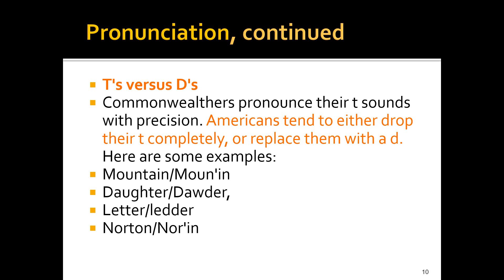For 'daughter,' the Commonwealthers — that is the Britishers — pronounce it with precision. The Americans replaced the T with a D, saying 'daughter.' They either drop the T completely, as in 'mountain' becoming 'mounin,' or replace it with a D, as in 'daughter.' So the T is either dropped completely or substituted with a D sound by Americans.